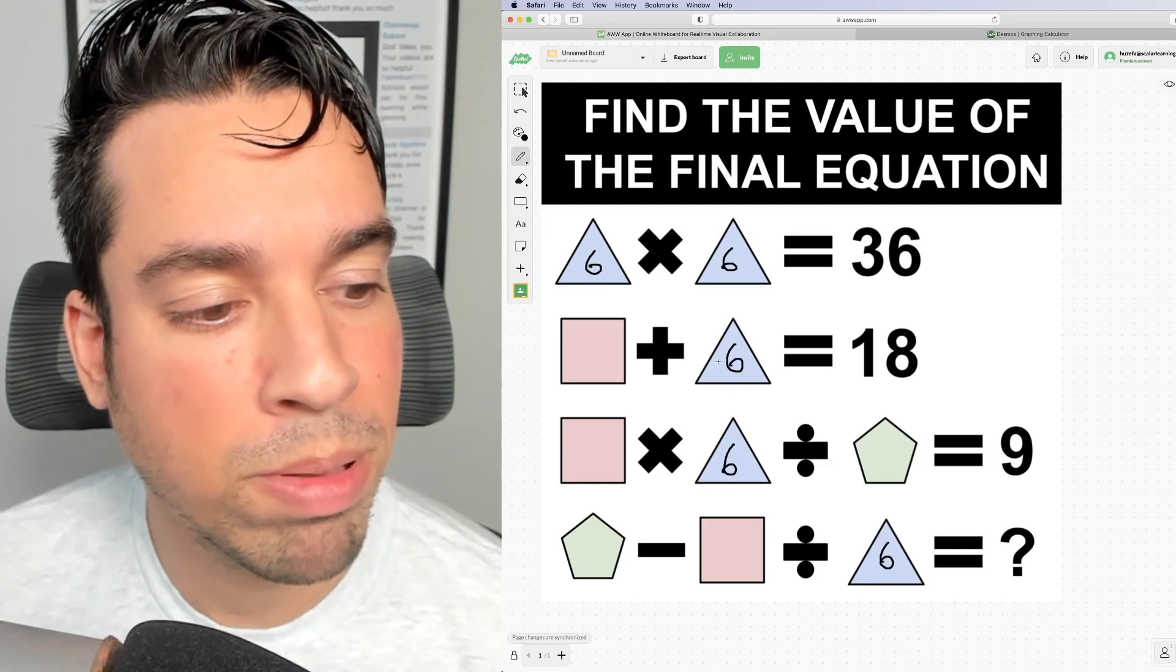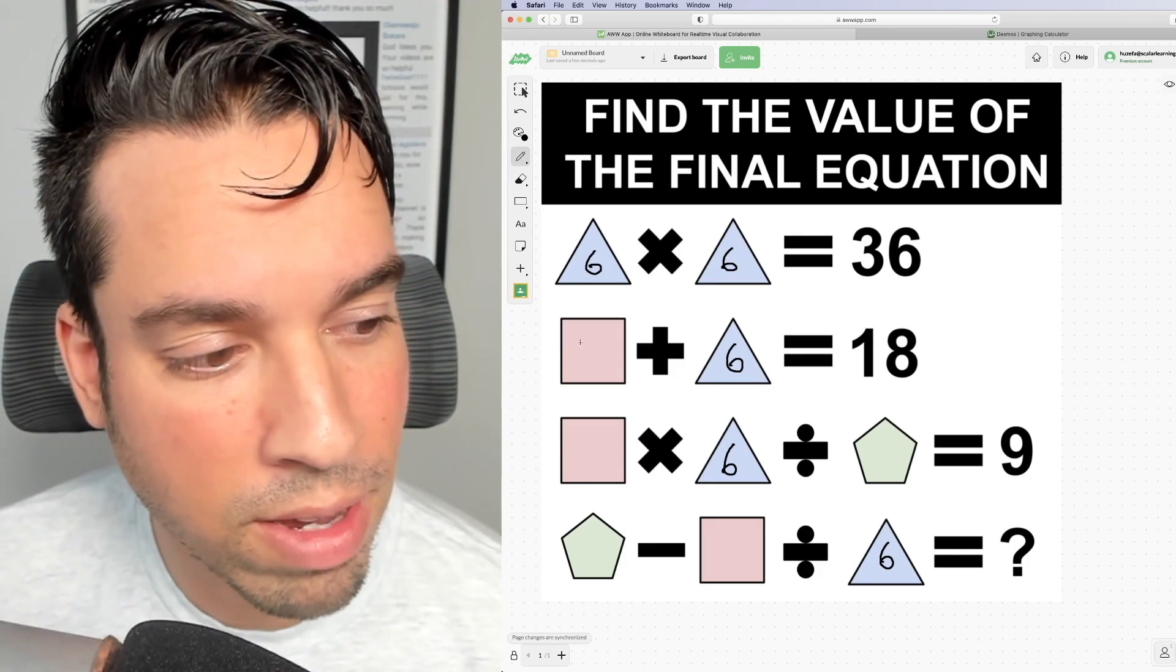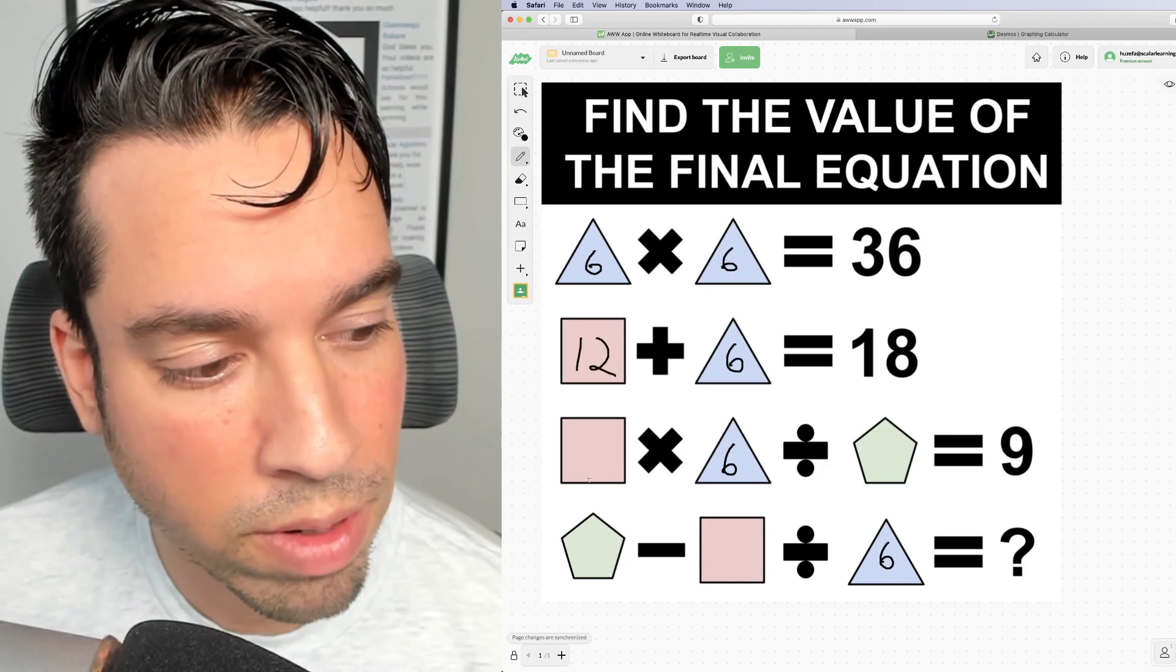Next we have a square plus a triangle is 18. Since we know that the triangle is already 6, the square has to have a value of 12. Excellent.